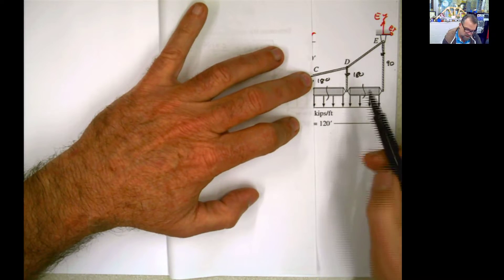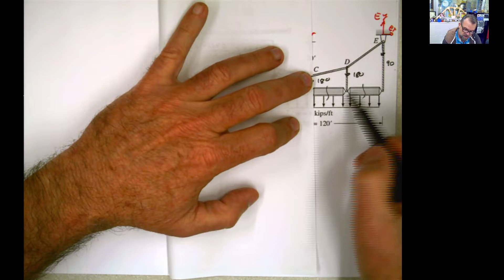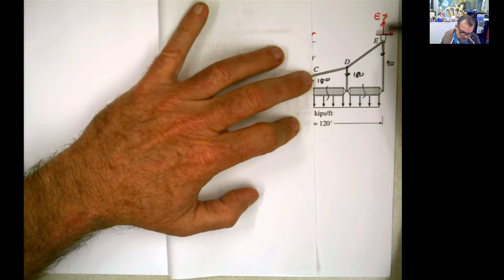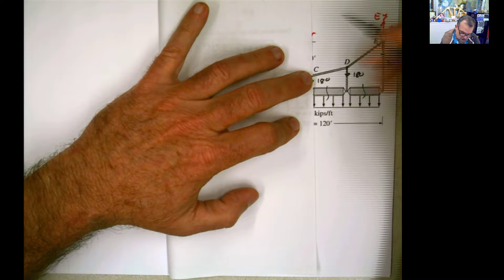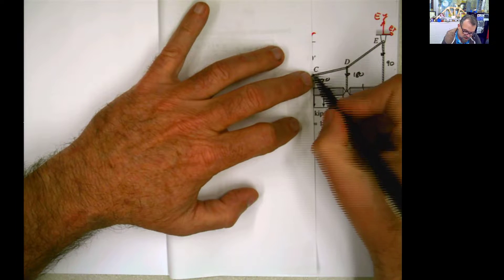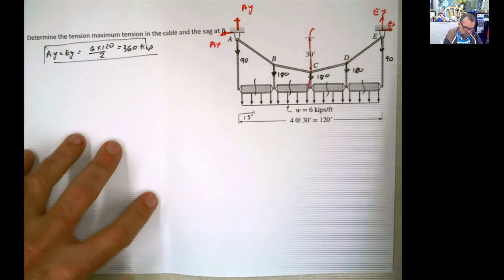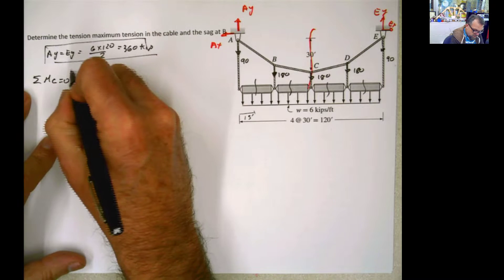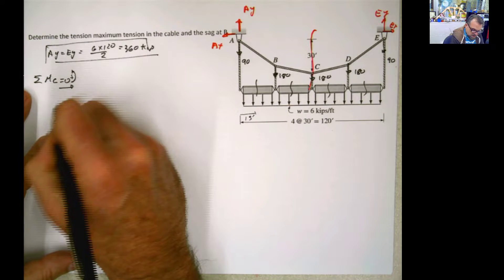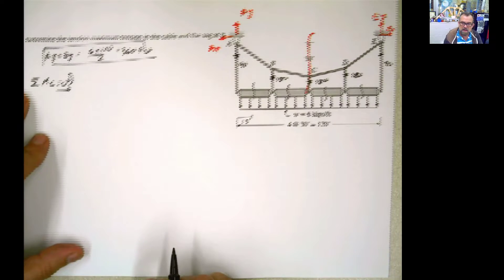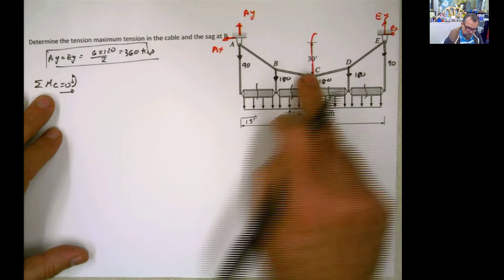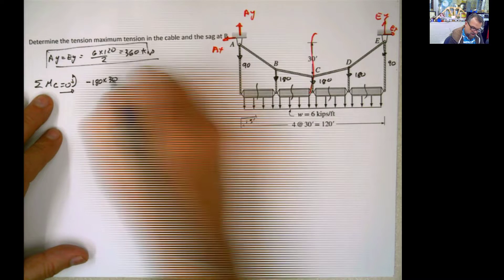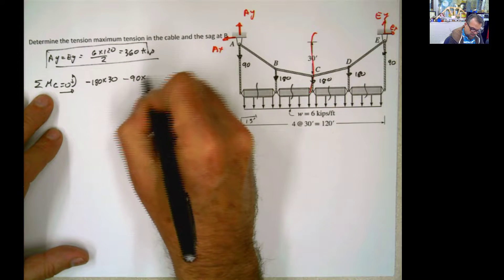What is going to be the summation of moment at this point? Negative 180 times 30, negative 90 times 60, and then you're going to have Ey times 60, positive, and negative Ex times the distance from here to there, which is 30. So let's put that in writing. Summation of moment at C equals 0. And I'm going to say that I'm using the right side of that cut over there. So if we do here,